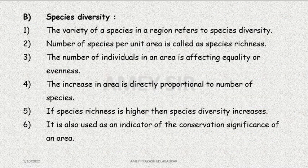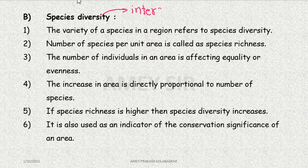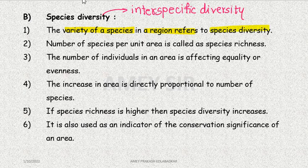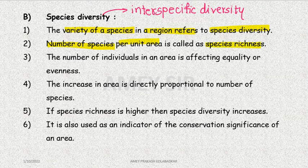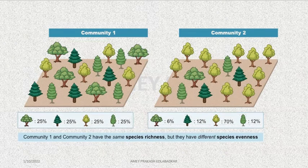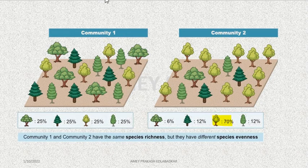When we talk about species diversity, it refers to interspecific diversity — the variety of species in a region. Different number of species per unit area is species richness. Here, if I have four different types of species, that indicates richness. But in four types of species, the relative number of individuals of each type affects equality or evenness.